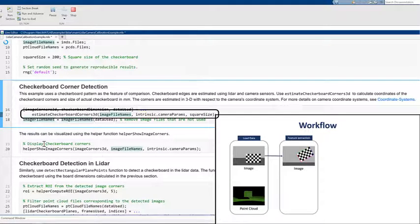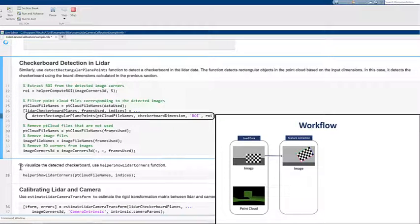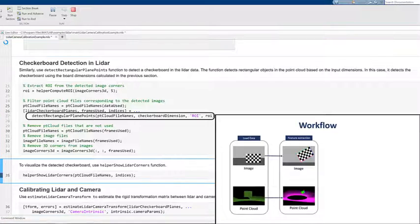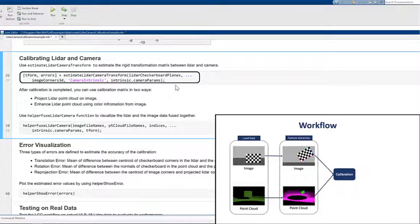We will now extract checkerboard features from images using estimateCheckerboardCorner3D function and use detectRectangularPlanePoint function to extract features from point cloud data. Now use the estimateLiDARCameraTransform function to estimate rigid transformation matrix between camera and LiDAR.